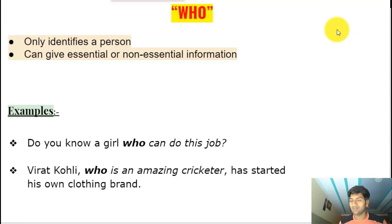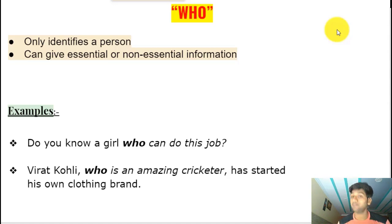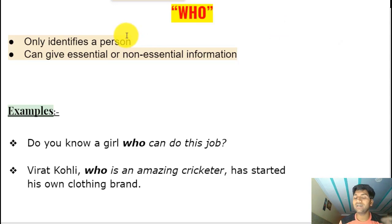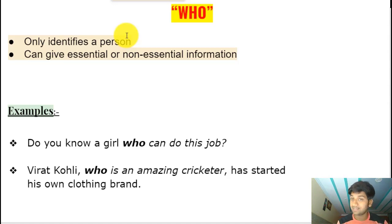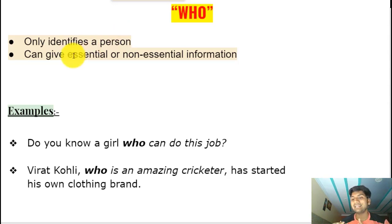Now let's understand all these pronouns one by one, which will help you understand each pronoun in a better way. We'll start with the first one: 'who.' Who is used to identify a person — it can only be used to identify a person, not a thing. And it can be used to give both essential and non-essential information.